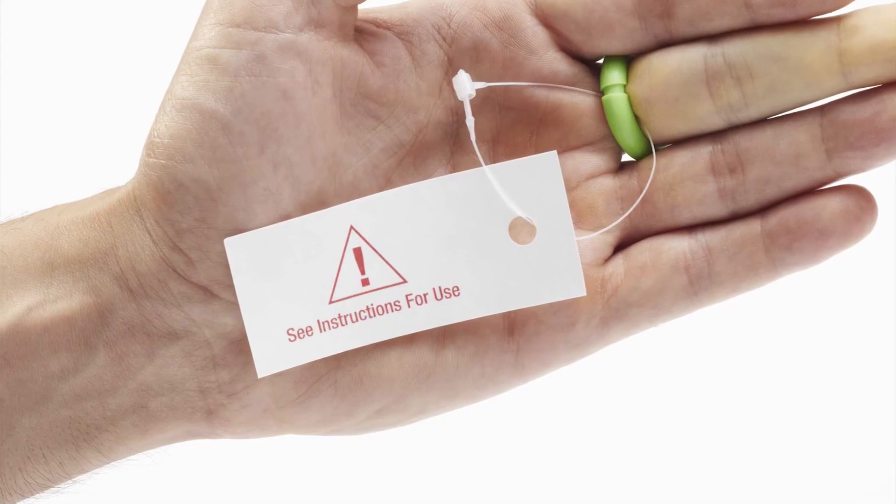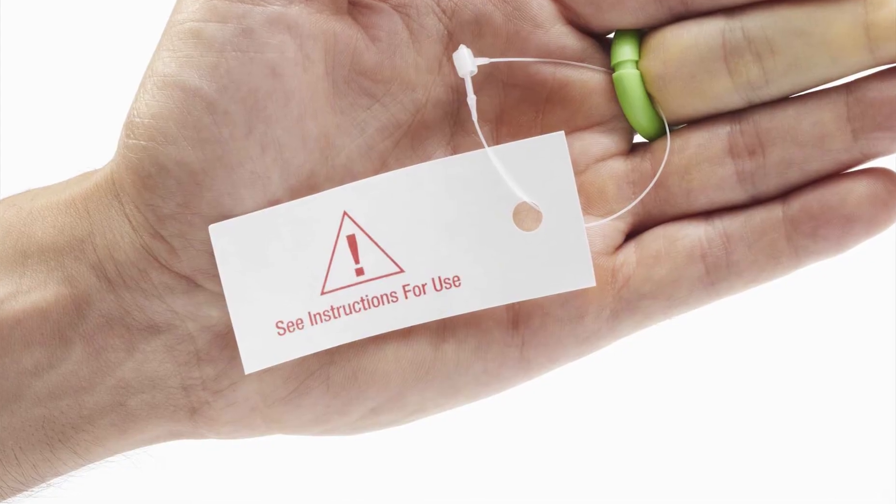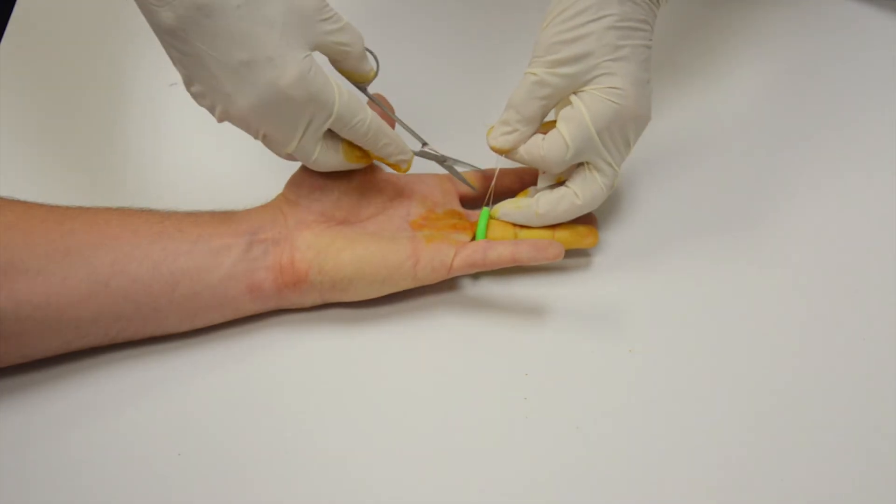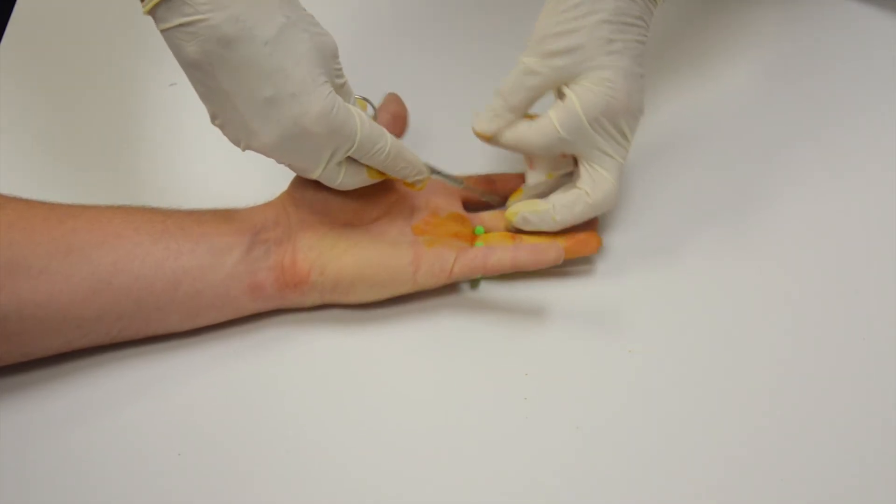Leave the tag on as a reminder and use the tourniquet for no more than 90 minutes. To remove, simply pull the tag upward and cut the tourniquet using scissors or a blade.